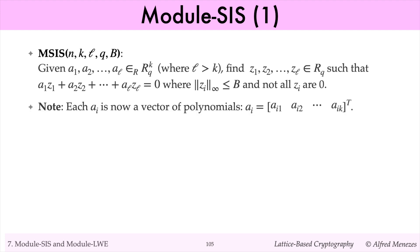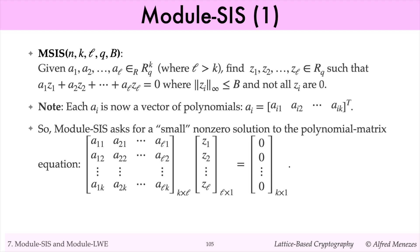Note that each ai is now a vector of polynomials. So module SIS asks for a small nonzero solution to the following polynomial matrix equation. Observe that if we have one module SIS solution, then we can get some other solutions by multiplying the components of a solution by x or minus x. In this way, one solution produces up to 2n minus 1 other solutions.